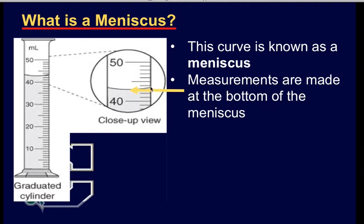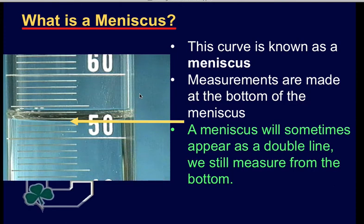So even though the top of this is just underneath the 44 line here, the meniscus line actually drops all the way down to the 43. So I would say that that's 43.0 milliliters. Sometimes, depending on your liquid, it might look like a double line. You always measure from the bottom then.